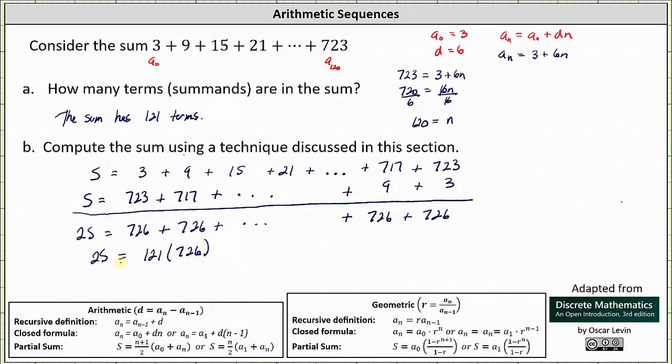And now to solve for S and determine the sum, we divide by 2. Simplifying, we have S = 121 × 726 = 87,846, giving us 87,846 ÷ 2, which is 43,923.